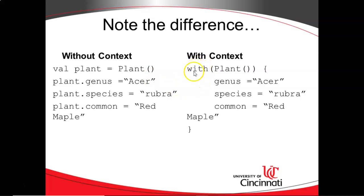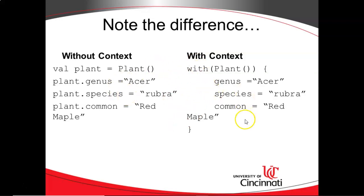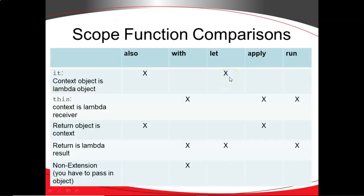With scope functions, we can do something like this. Notice we have the scope function `with`, and inside of it we're passing a new plant object. We have our block — open curly and closed curly. This plant object essentially has scope within this block; it is the primary object we're operating on. So when you see `genus = acer`, `species = ruber`, `common = red`, each time we're operating on this plant object, even if the `with` block is inside another class or object. These two approaches on the left and right are essentially the same thing, but using the scope function on the right saves a whole lot of typing.